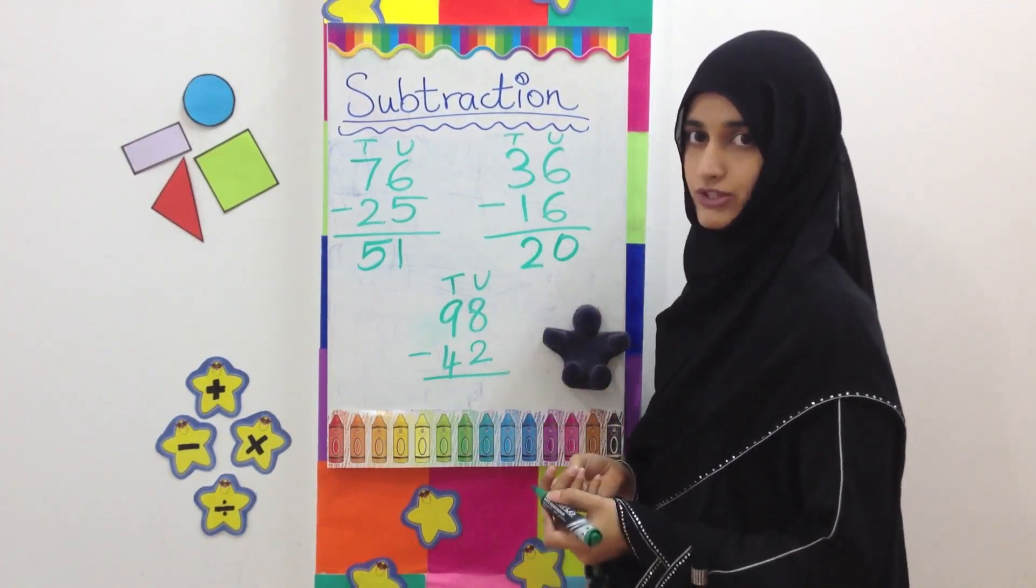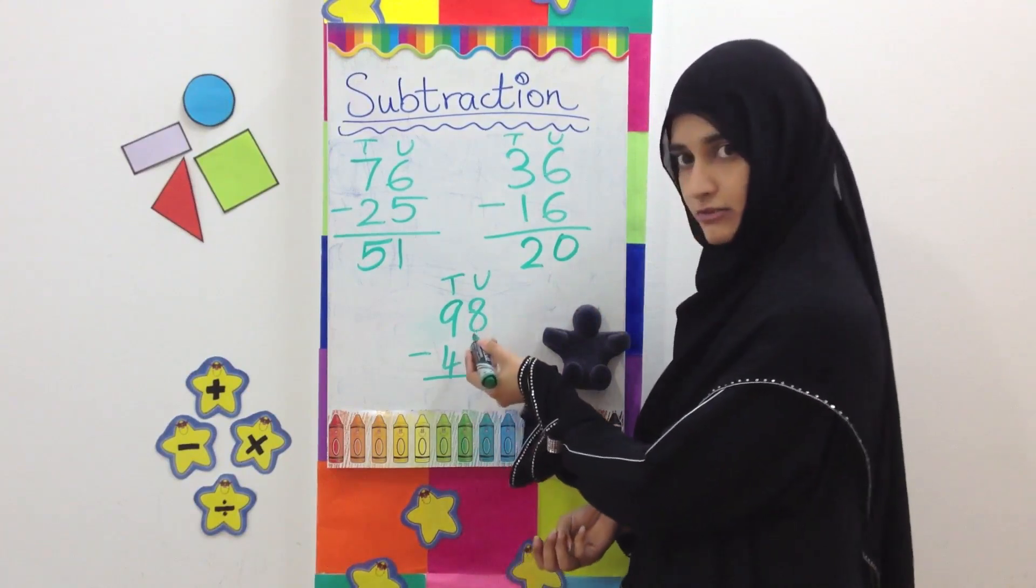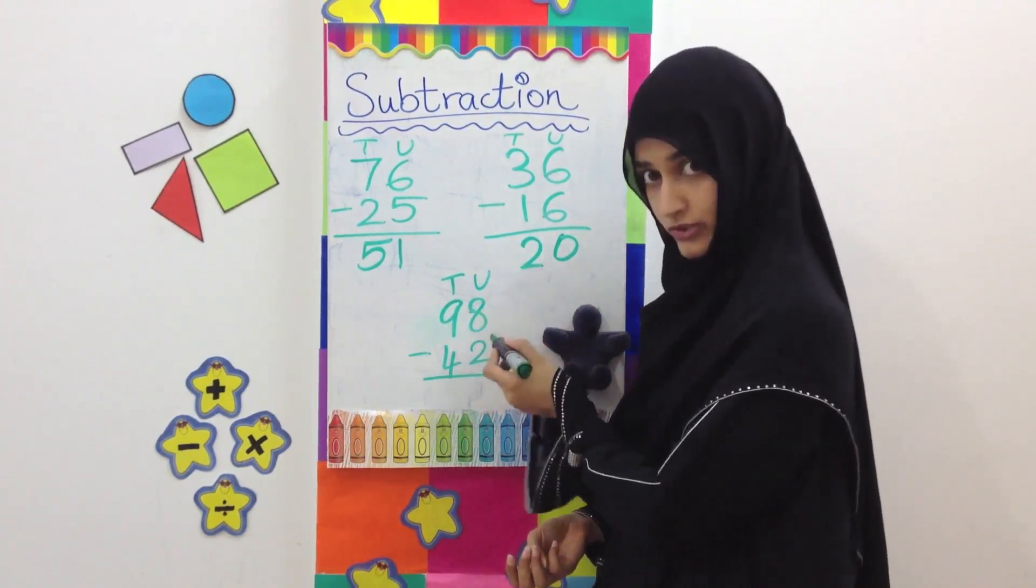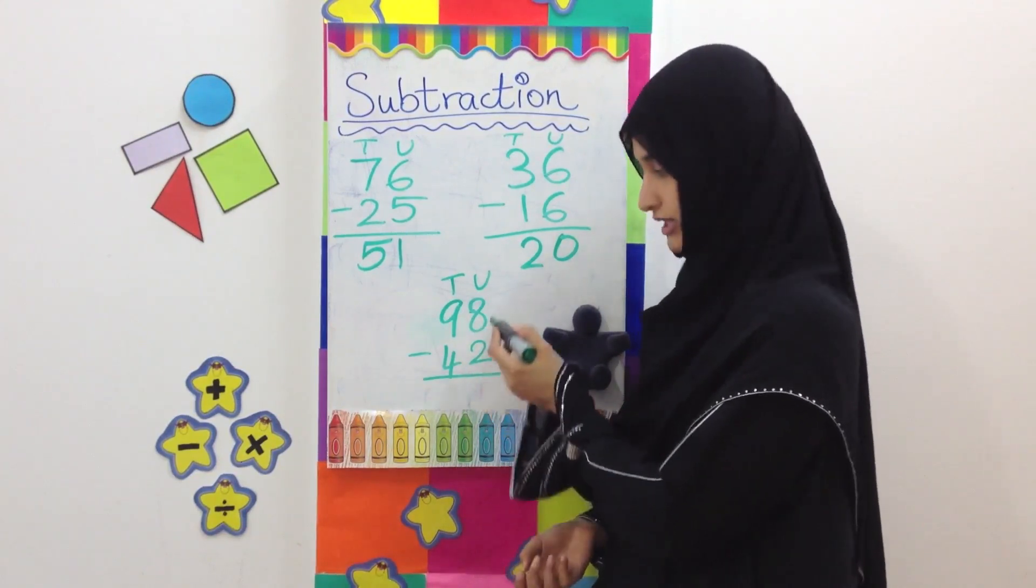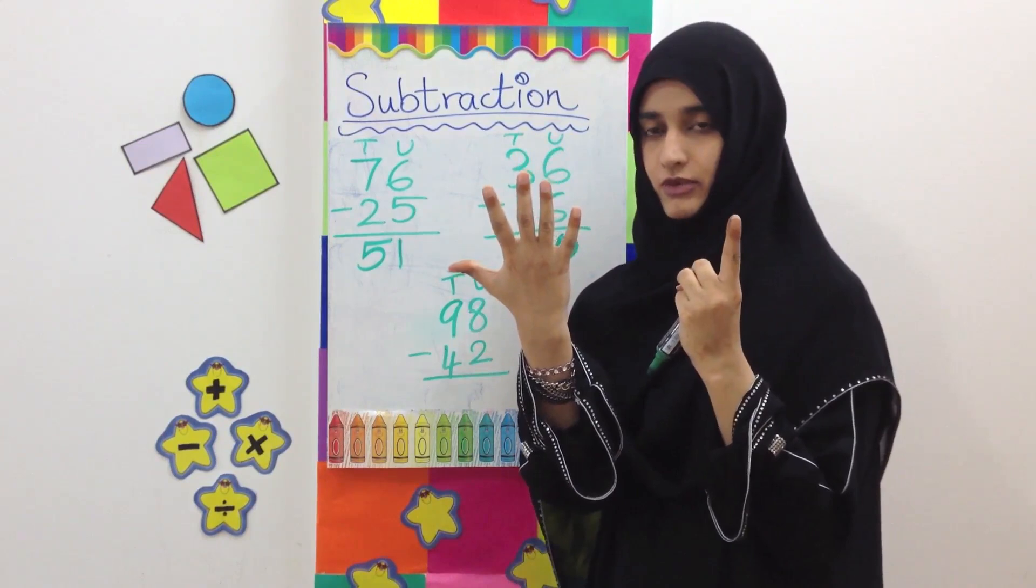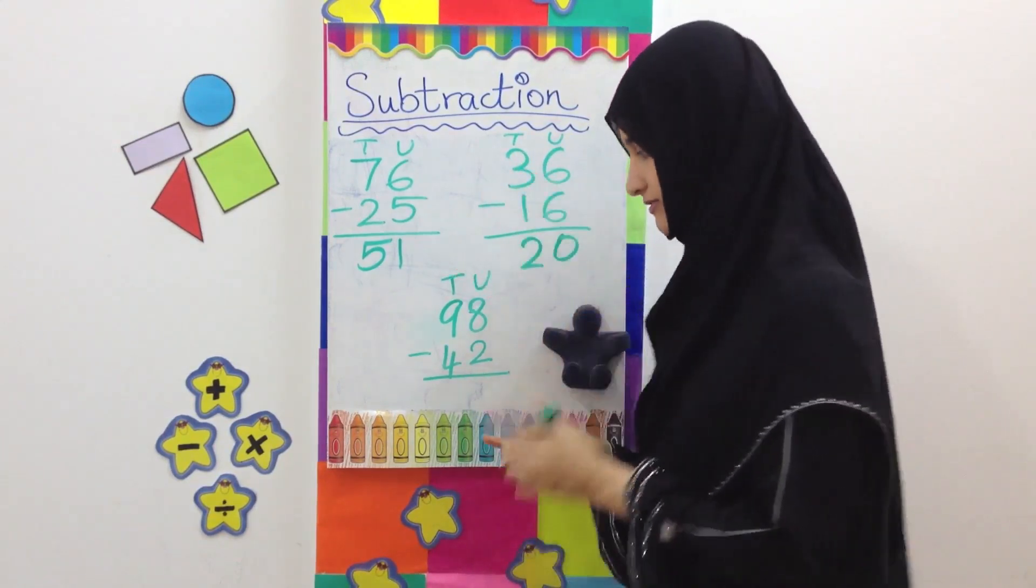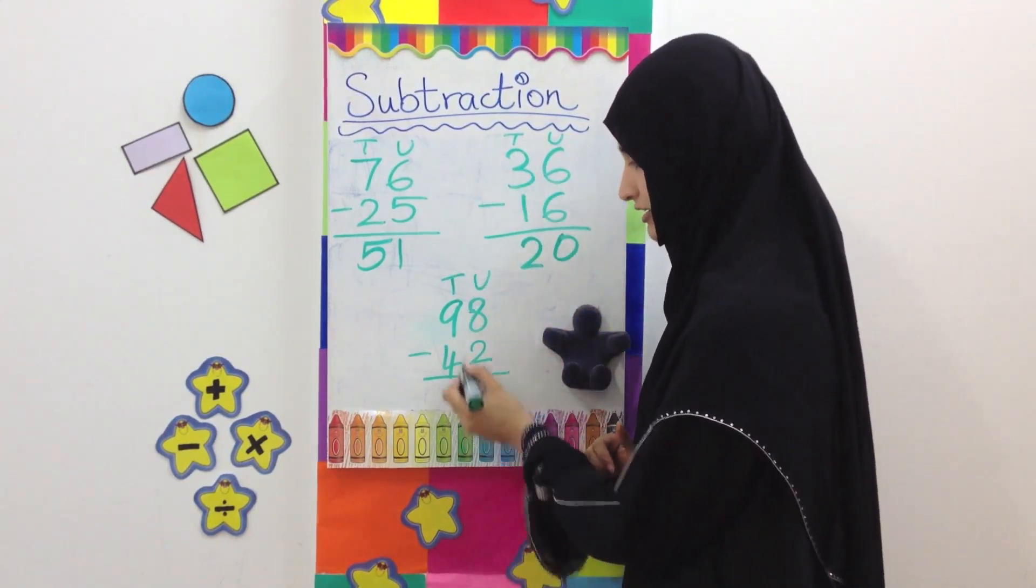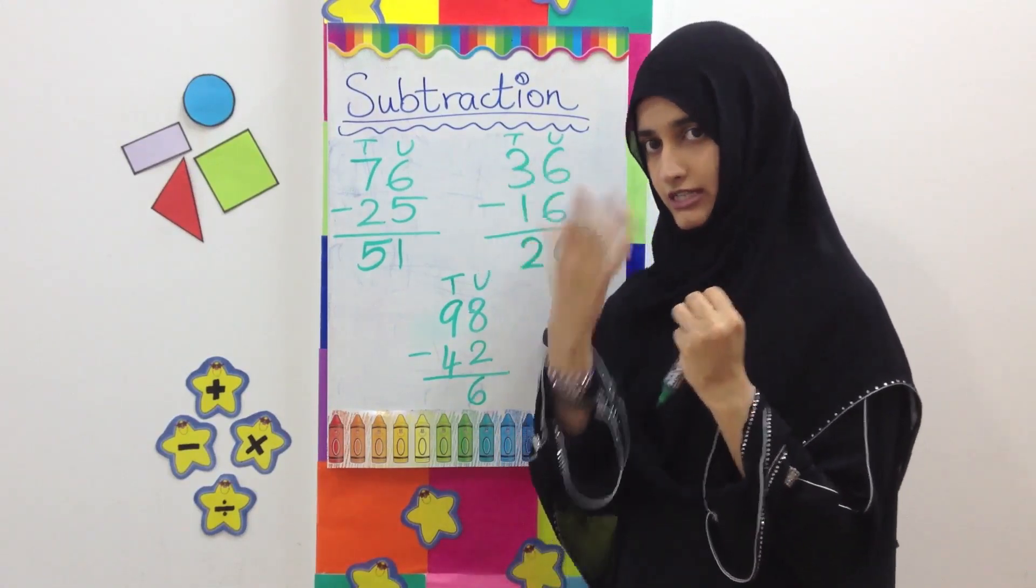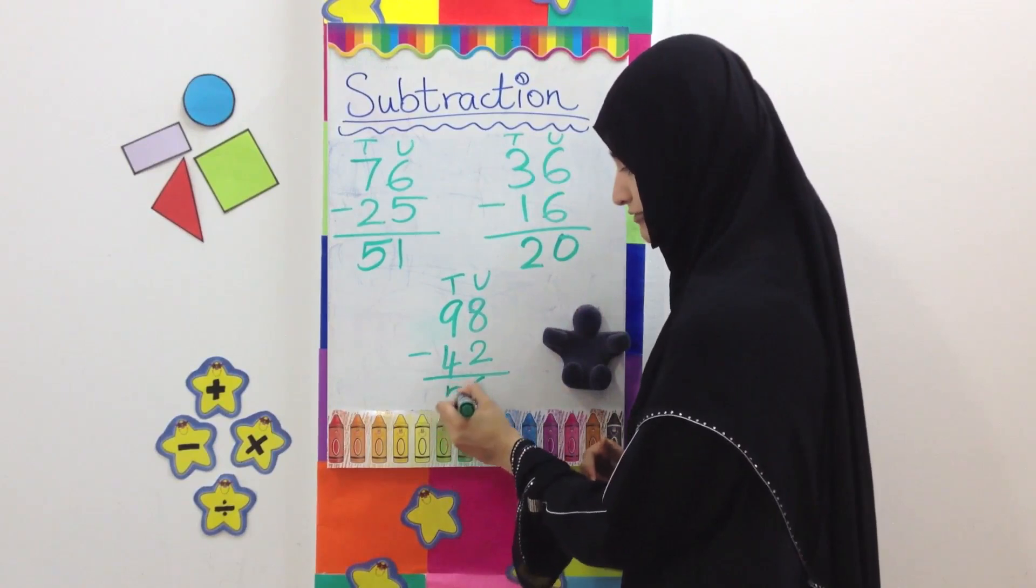The last sum here is 98 minus 42. We are going to always solve the units first. So 8 minus 2. Here we have 8, take away 2, answer is 6. 6 units come here. 9 minus 4, take away 4, answer is 5. We have 5 tens.